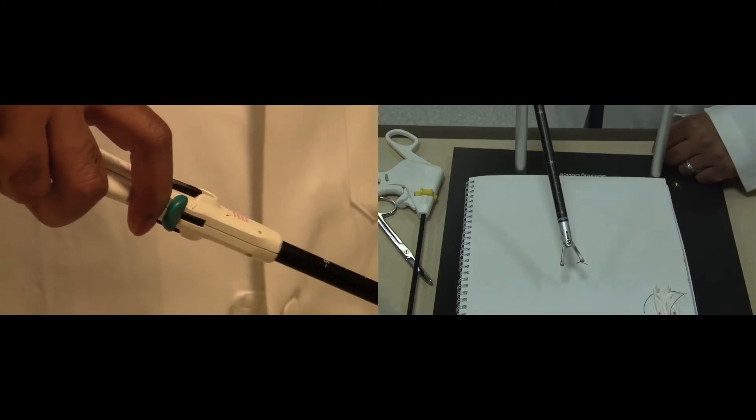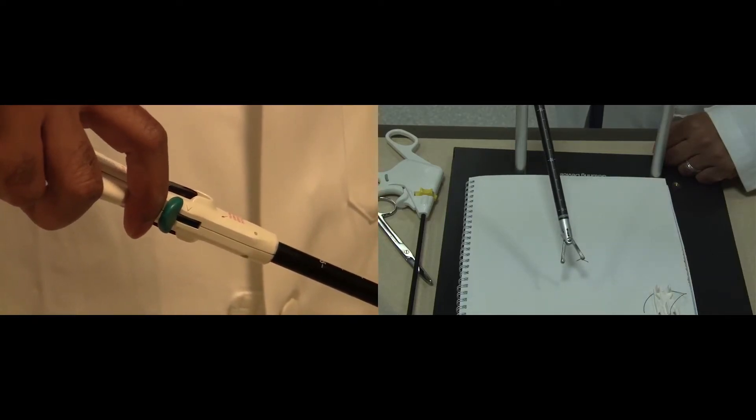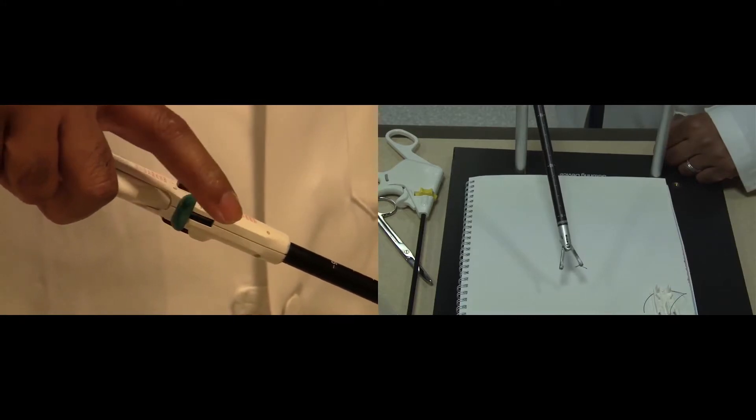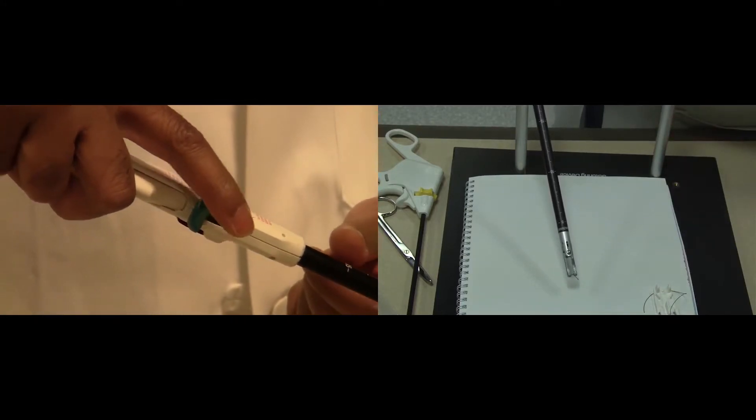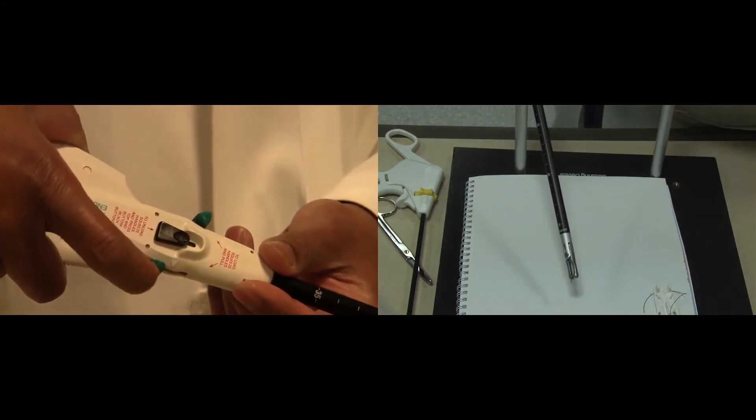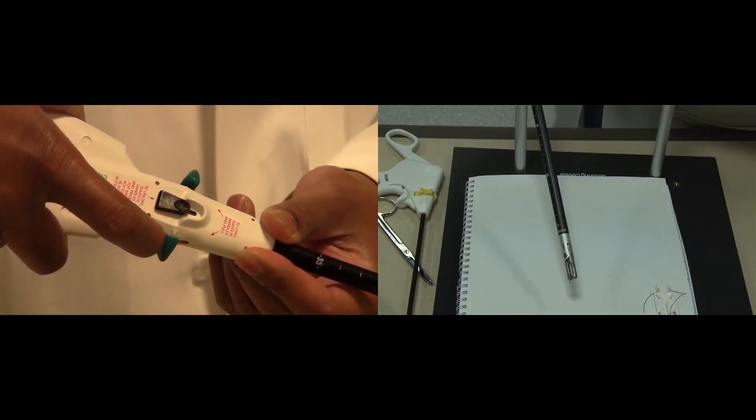This is a demonstration on how to change the needle on the endostitch suturing device. First, close the device by squeezing the two handles, and then manipulate the green levers so that they're in the closed position, which is in the middle.